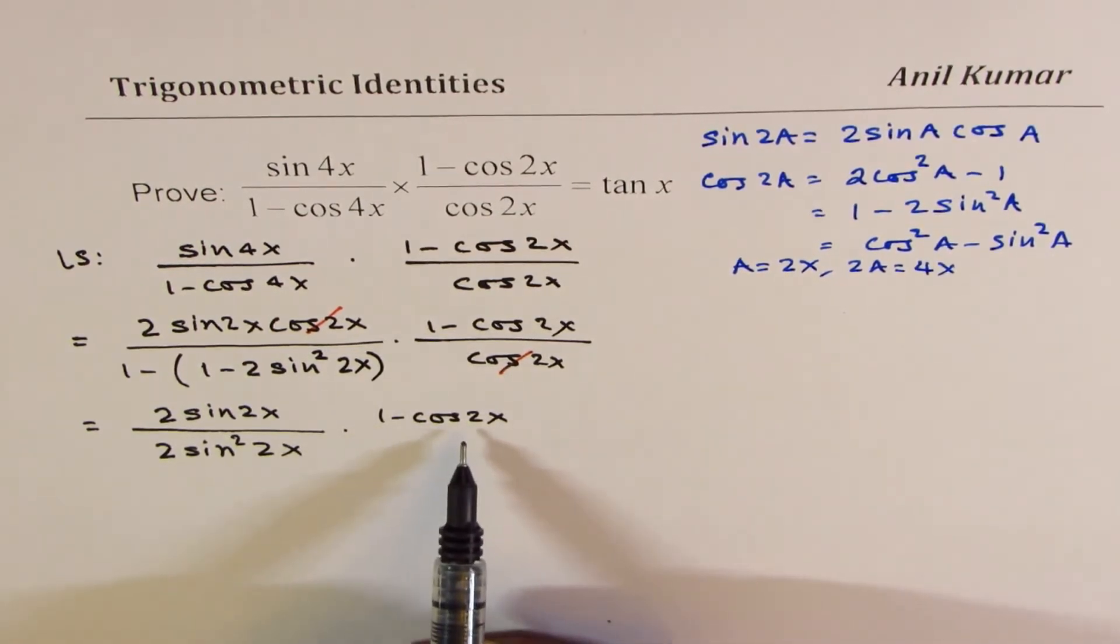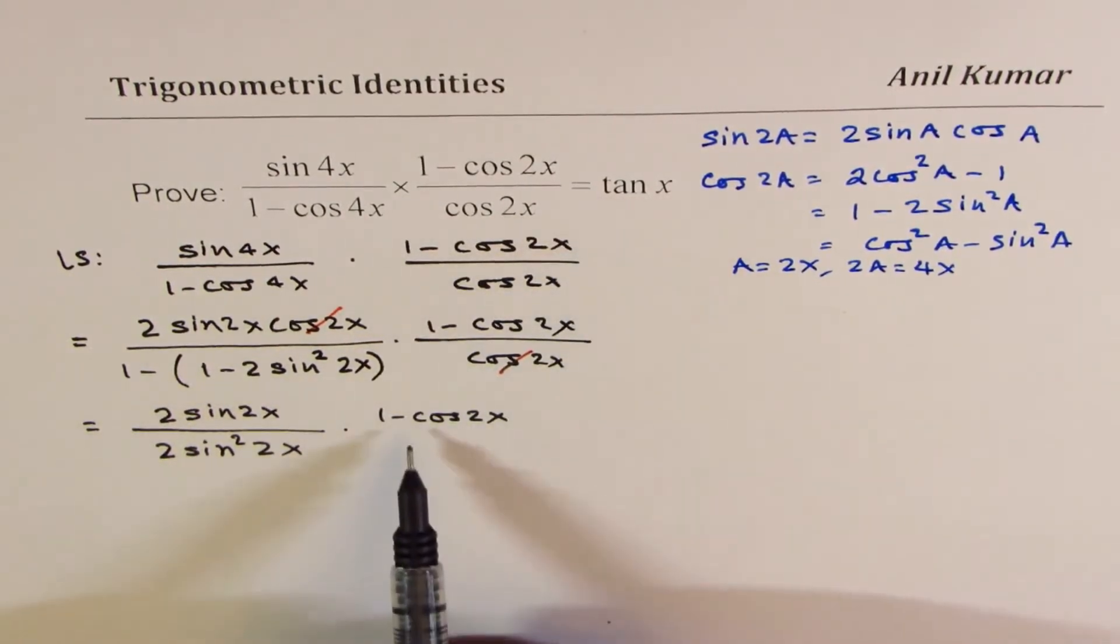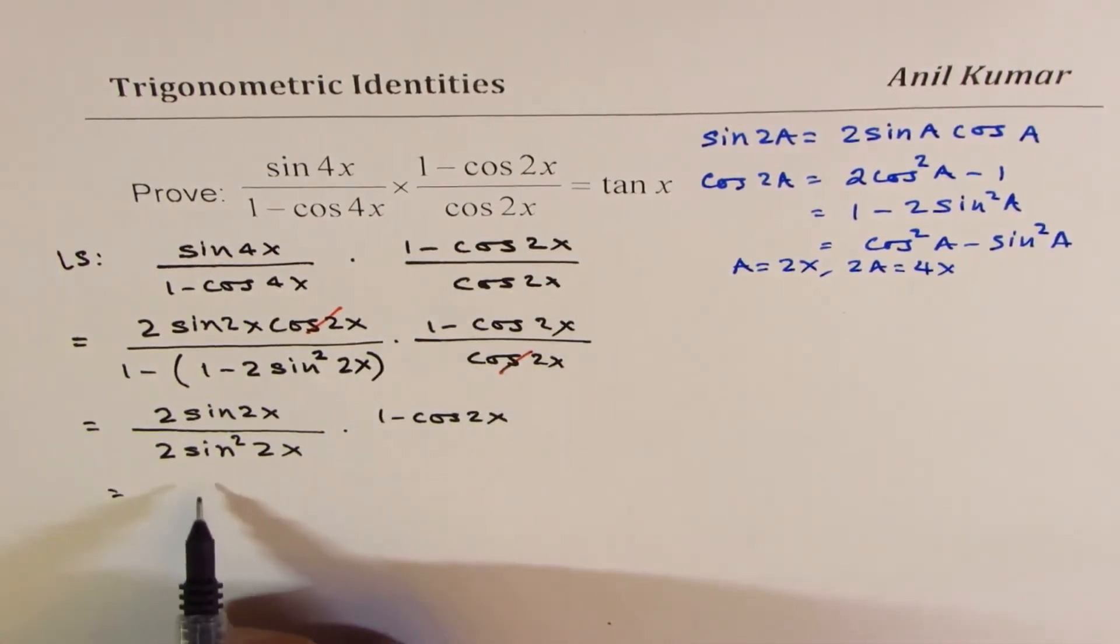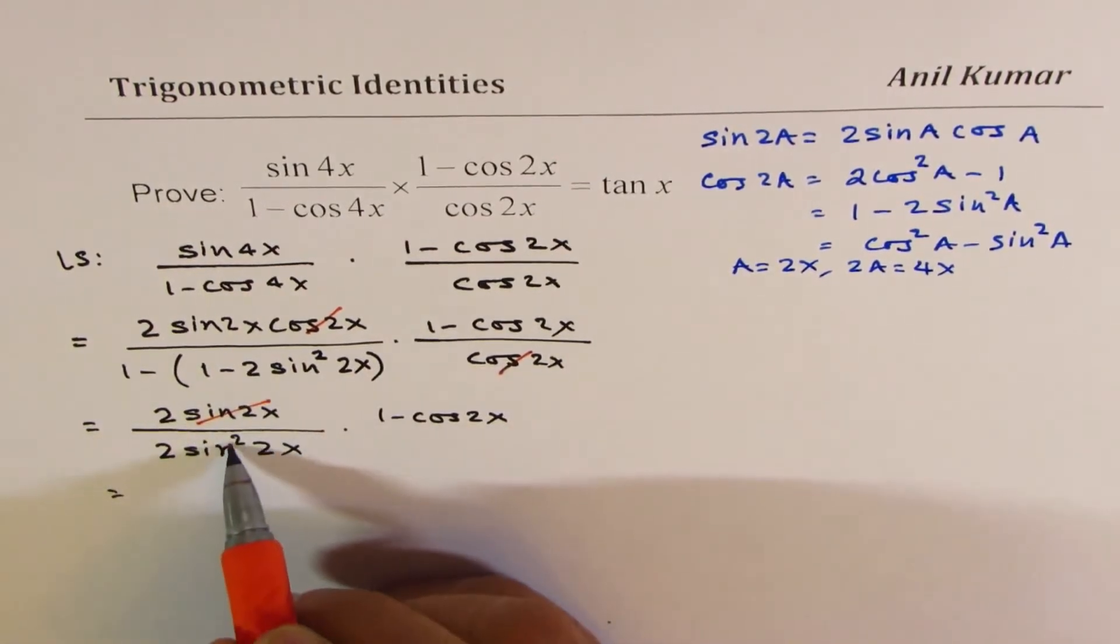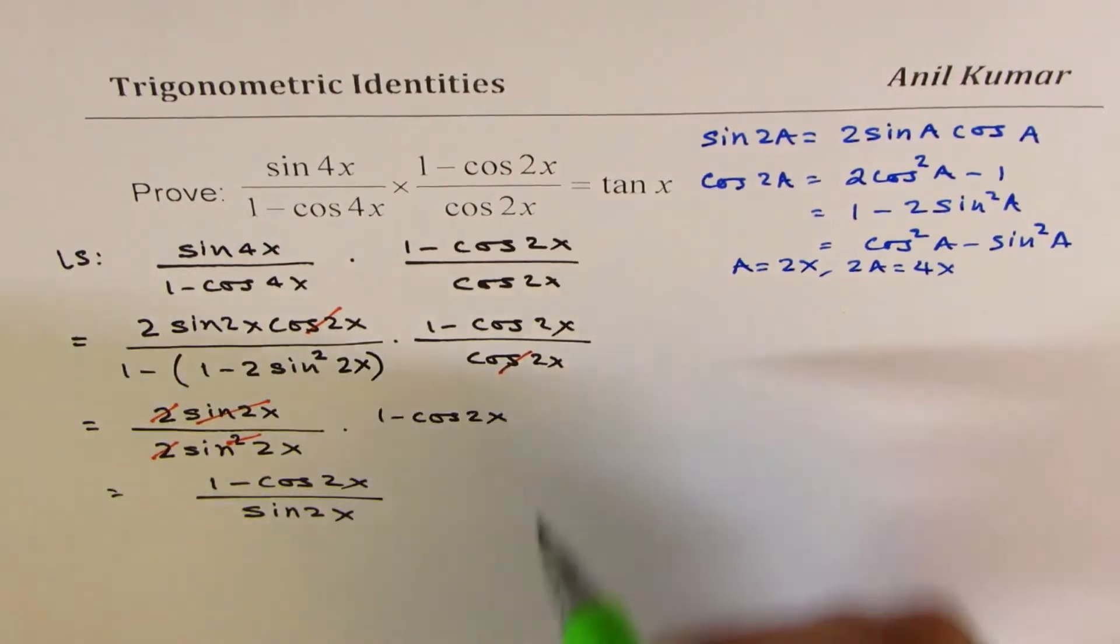And 1 minus cos 2x, I can write this as, since we want sine on the top, I will use for 1 minus cos 2x the formula. Let me simplify this once more. So I'm cancelling sine 2x. I'm cancelling these twos also. So with that, I'm left with 1 minus cos 2x in the numerator and sine 2x in the denominator. Is that clear? So let's work with this further.